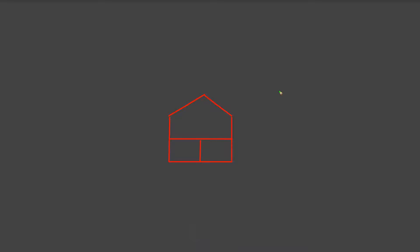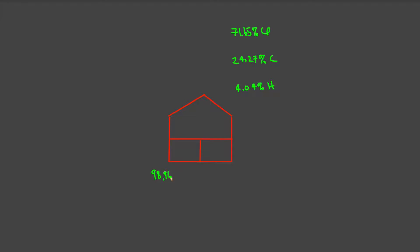We recognize this as a chemical composition problem, and hence it lends itself to the grid that we developed earlier. Let us now write the data in light of this framework. We have 71.65% chlorine, 24.27% carbon, and 4.04% hydrogen. We also know that the molar mass of the material is 98.96 grams per mole.